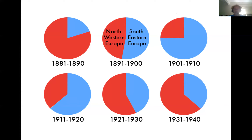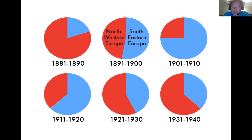One of the backdrops to this is the changing pattern of immigration to the United States. On the chart, the red pies are immigrants who come from Northern and Western Europe. The blue pies are immigrants who come from Southern and Eastern Europe — Italians, East Europeans, Russians — and a significant number of Jews who are part of this immigrant pattern. They're seen as alien and contrary to traditional American ideals. The pattern shows fewer and fewer Northern and Western European immigrants until we get to the 1920s, when Congress passes laws restricting immigrants from outside Northern and Western Europe.